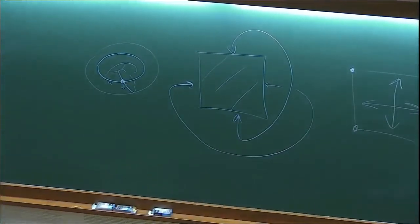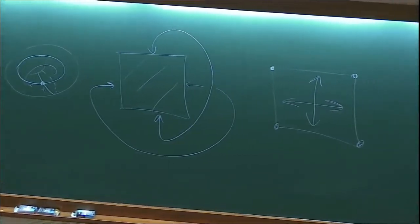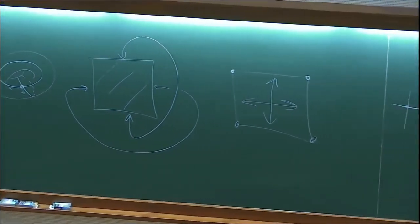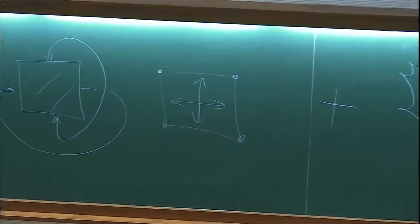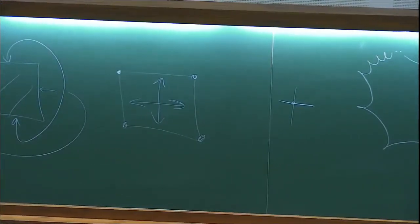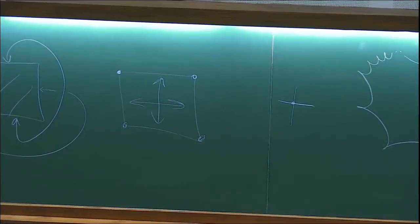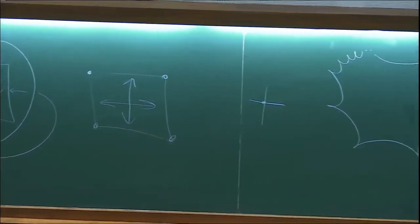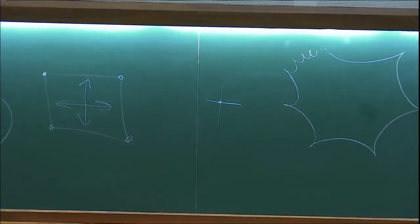So I wish to play this game in higher genus. I take a 4G-gon. G equals 2 means 8 sides. So we have already 1, 2, 3, 4, 5, 6, 7, 8. And what I do to make a surface of genus 2, I identify edges. And this is my model.